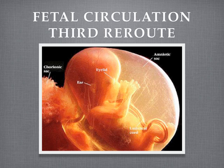So we're on our third reroute. We've already seen the ductus venosus allowed blood to escape from the capillaries of the liver and go over into the inferior vena cava, where it is diluted some by the inferior vena cava blood. And then we saw how that blood, when it arrives in the right atrium, was able to jump through the foramen ovale over into the left atrium and avoid a major dilution by blood entering the right atrium from the superior vena cava.